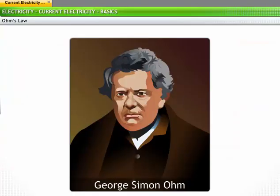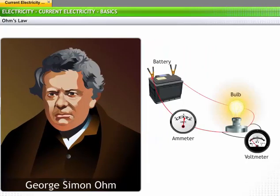In 1827, a German scientist, George Simon Ohm, conducted a series of experiments to study the variations in electric current when the potential difference across the conductor was changed. With the findings of his experiments, he postulated Ohm's law, which explains the relationship between electric current, voltage, and resistance.